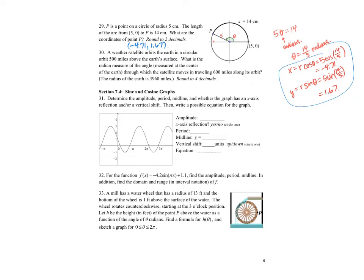Number 30, a weather satellite orbits the Earth in a circular orbit, 500 miles above the Earth's surface. So we have the Earth, and then we have this orbit, and we have this 500 miles. What is the radian measure of the angle through which the satellite moves in traveling 600 miles in its orbit? So we want to go this angle, and this is 600. And the radius of Earth is 3960. So I want to find that arc length.